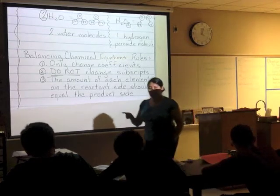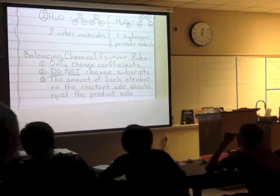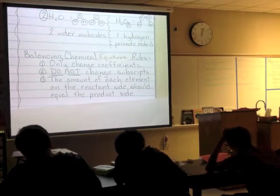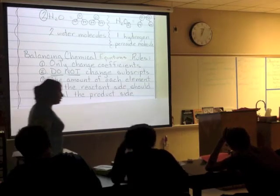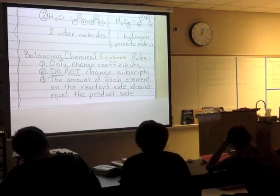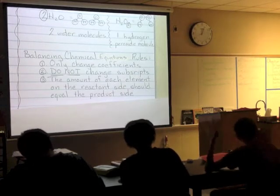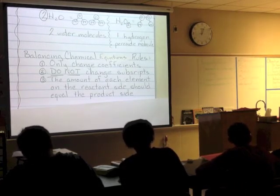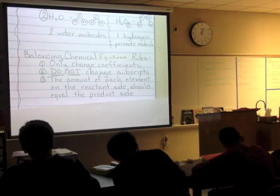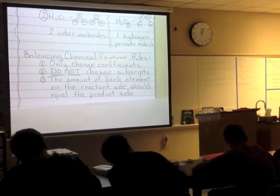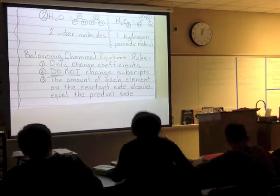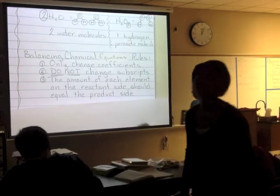So we only change coefficients, we never change subscripts, and what we're trying to do when we balance equations is get the same amount of each element on the reactant side equal to the product side. If I have five oxygens on the reactant side, I'm going to have five oxygens on the product side. The reason is because the law of conservation of mass says we can't create or destroy anything — what we put in, we have to get out. It might not look the same, but it's still going to be the same amount.